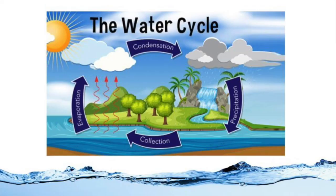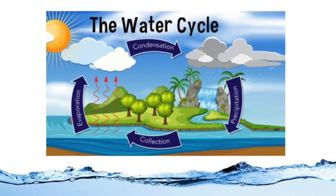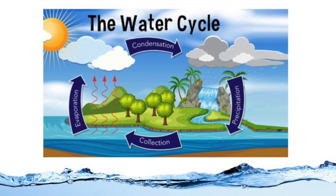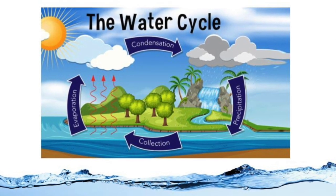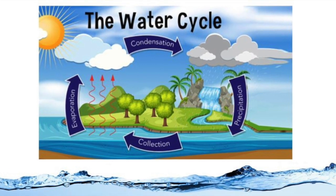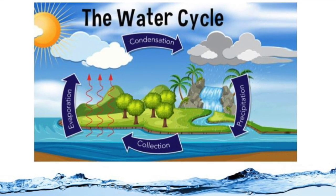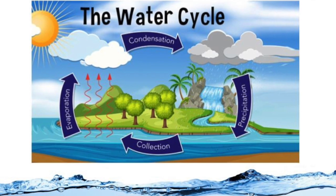The water cycle is a continuous cycle that has different components that reflect all the characteristics of water. The cycle can start in any direction.